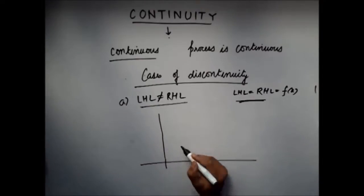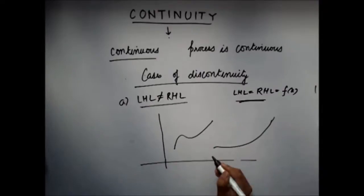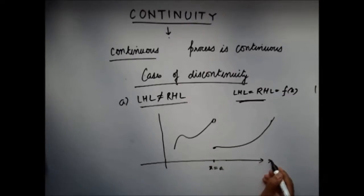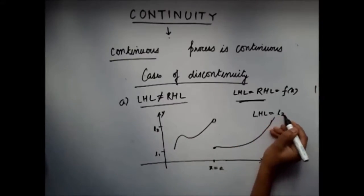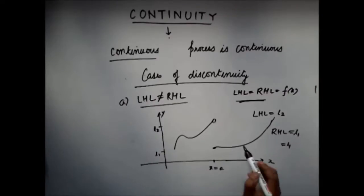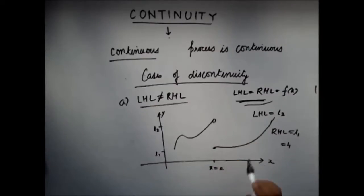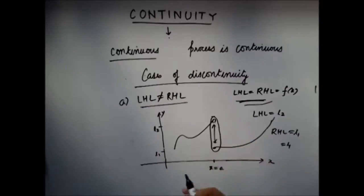An example for this could be: let's say this is the graph of my function. Here, you can see that the left hand limit is equal to L2, the right hand limit is equal to L1, and the functional value is also equal to L1. So this condition is not satisfied and the function is discontinuous. You can graphically see that you have to lift your pen to draw the whole graph — the function is discontinuous and has a gap or hole at this point.